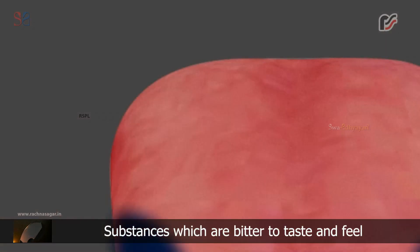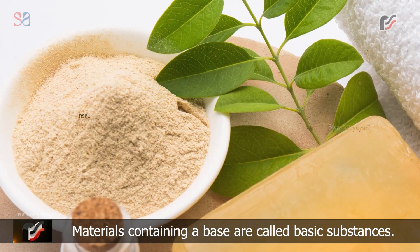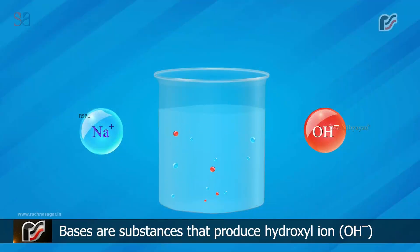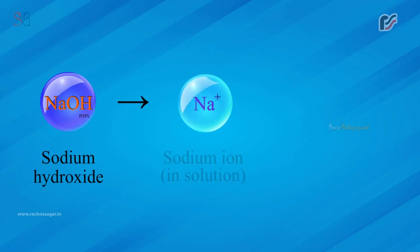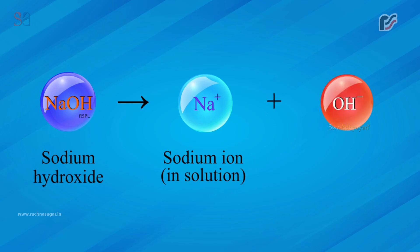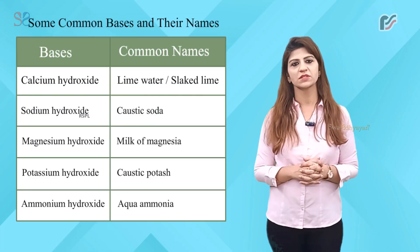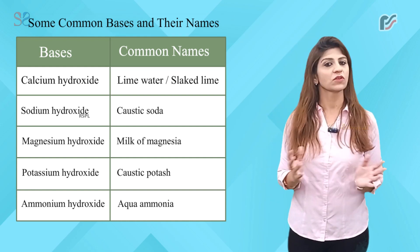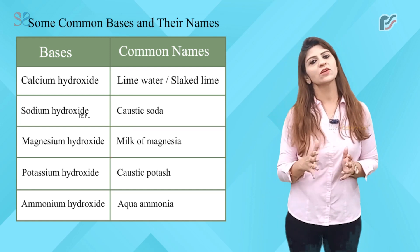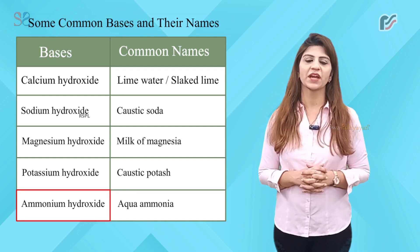Bases: substances which are bitter to taste and feel soapy on touch are called bases. Materials containing a base are called basic substances. Bases are substances that produce hydroxyl ion OH⁻ when dissolved in water. NaOH → Na⁺ + OH⁻. Some common bases and their names: calcium hydroxide — lime water or slaked lime; sodium hydroxide — caustic soda; magnesium hydroxide — milk of magnesia; potassium hydroxide — caustic potash; ammonium hydroxide — aqua ammonia.